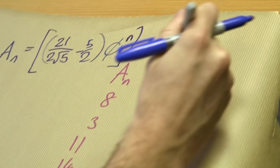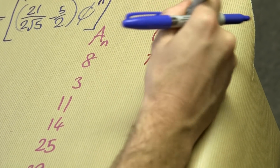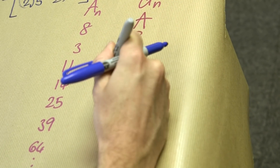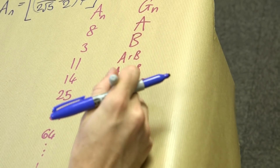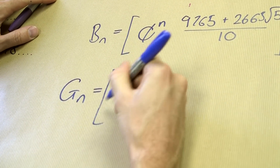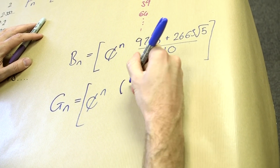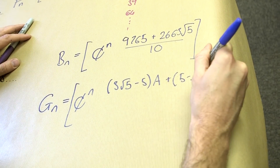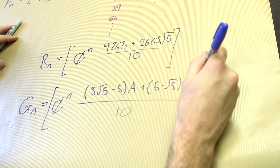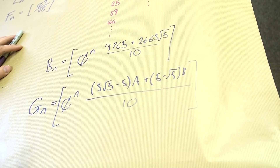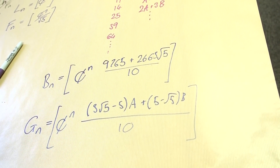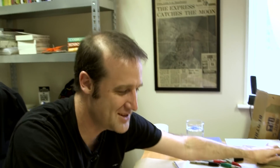I worked it out in general terms as well. If we have the generalized sequence starting A, B, then A plus B, A plus 2B, 2A plus... I'm going to stop there before people start shouting Fibonacci. If that carries on, that sequence is generated by: the generalized number equals, rounded, golden ratio to the n — that's always there — times 3 times root 5 minus 5, outside A, plus 5 minus root 5, outside B, divided by 10. This is interesting — if I say it enough times, it will be.